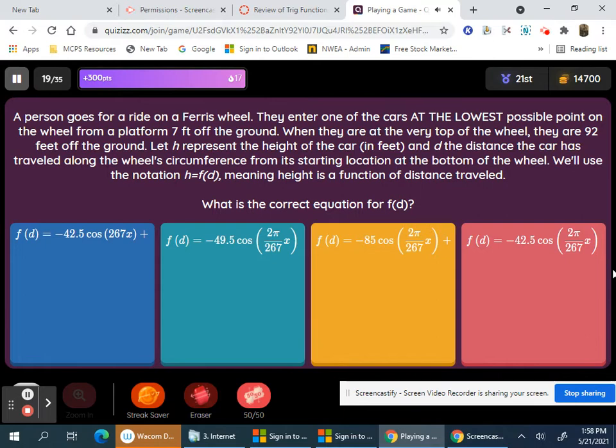A person goes for a ride. The lowest point, so it's a negative cosine curve. From 7 to 92 would be 85, and half of that is 42.5. So I can eliminate this one and this one. It's either this one or this one. You have to take the radians divided by the period.